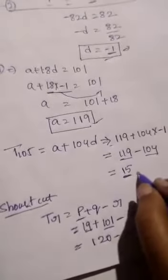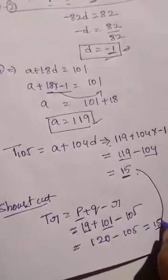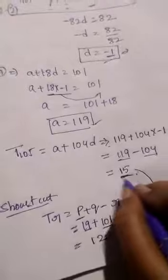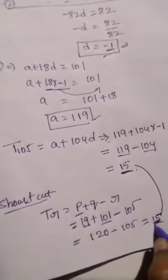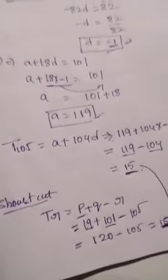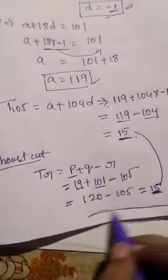So in traditional method we got 15 and shortcut we got 15. This trick is very helpful in MCQ questions.